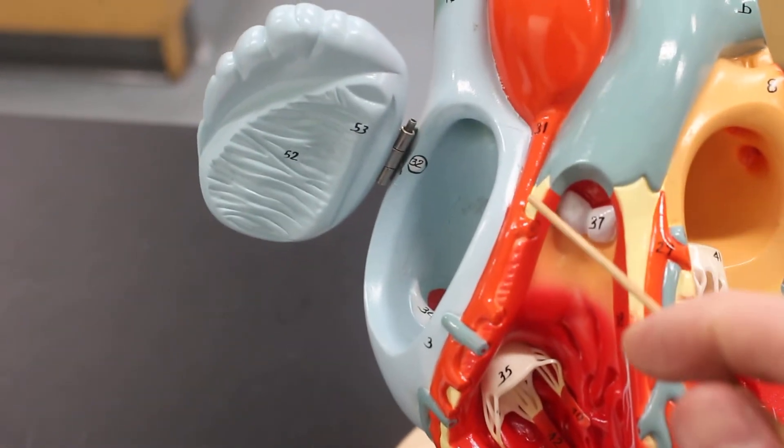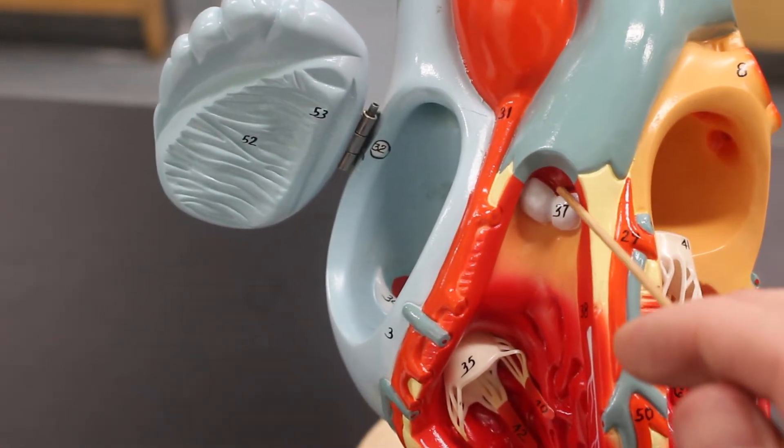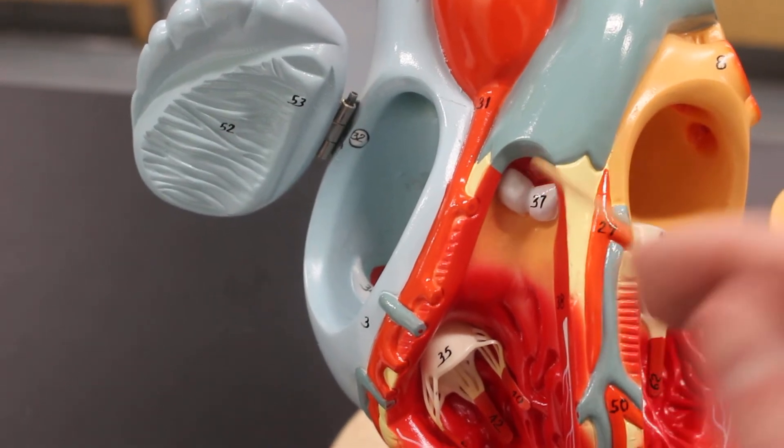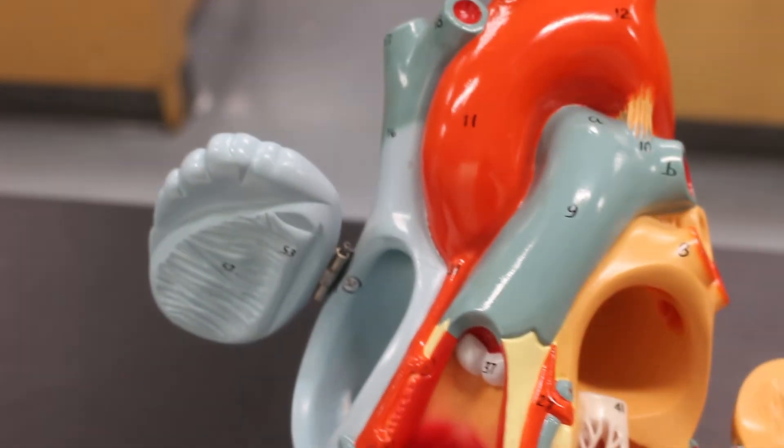Up here is the pulmonary semilunar valve going to the pulmonary trunk.